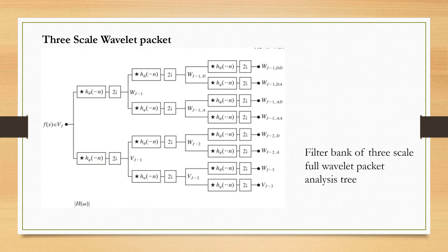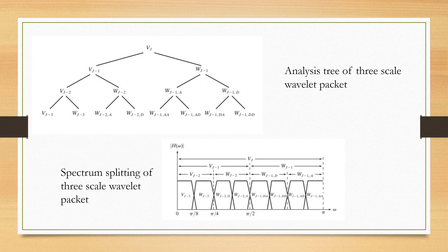In a similar manner, we have 3-scale Wavelet Packet decomposition. Here both the approximation space and detail space are further split into approximation and detail spaces. Initially F(x) is divided into WG-1 and VG-1; VG-1 is further divided, and the detail space WG-1 is also split into WG-2, VG-2, and so on. The same block diagram is represented in the form of an analysis tree and spectra splitting.